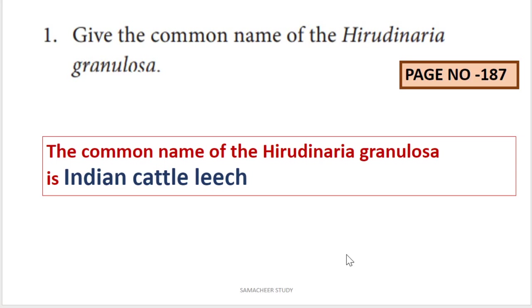First question: give the common name of Hirudanaria granulosa. The common name is Indian cattle leech, and the Tamil name is Attai.